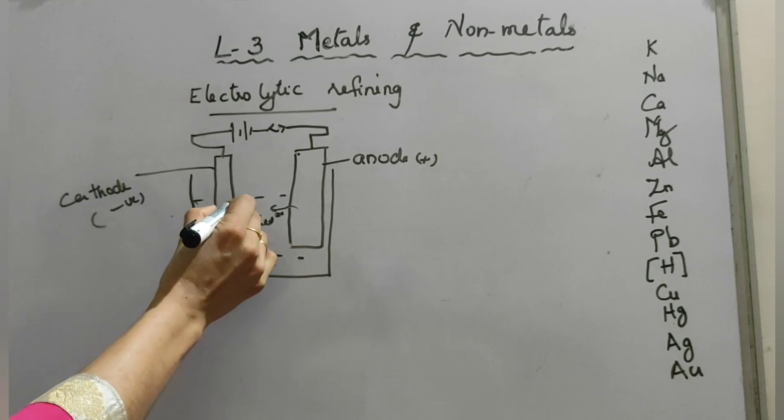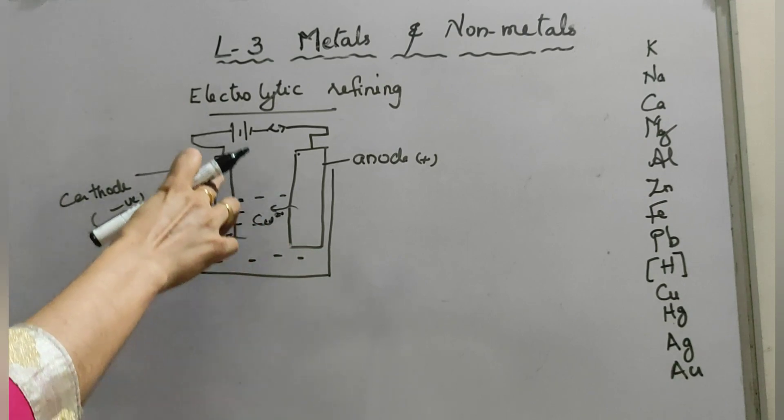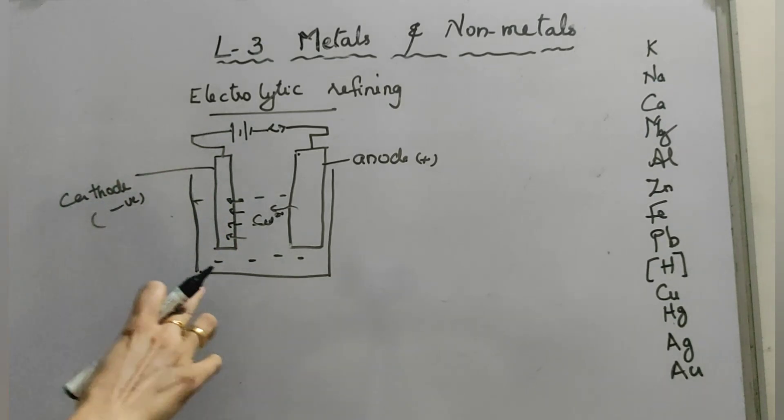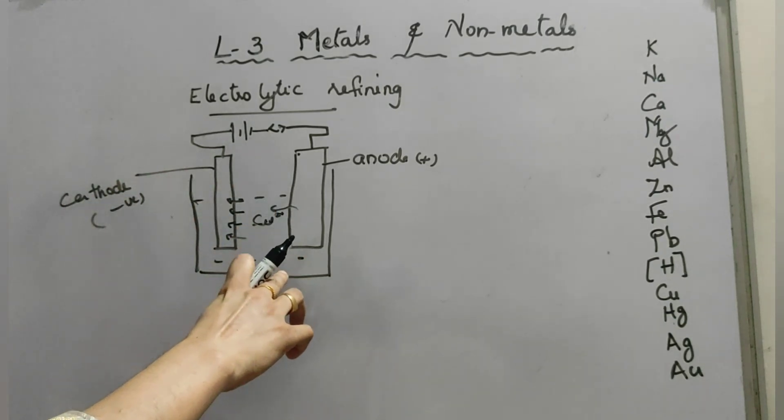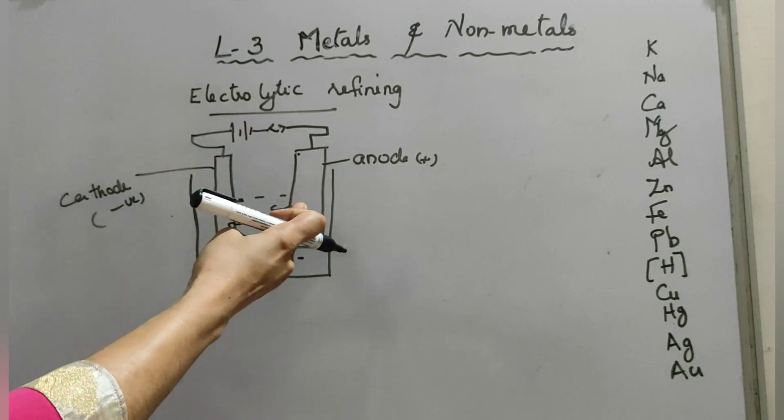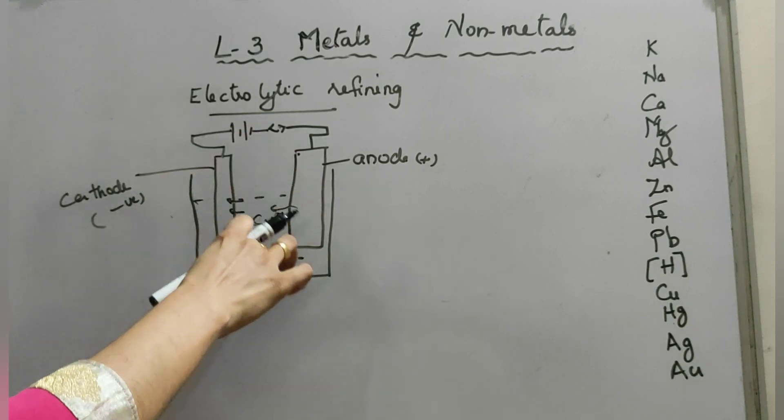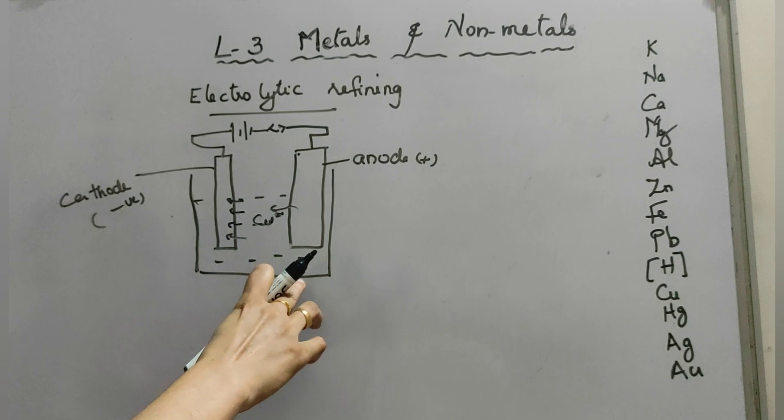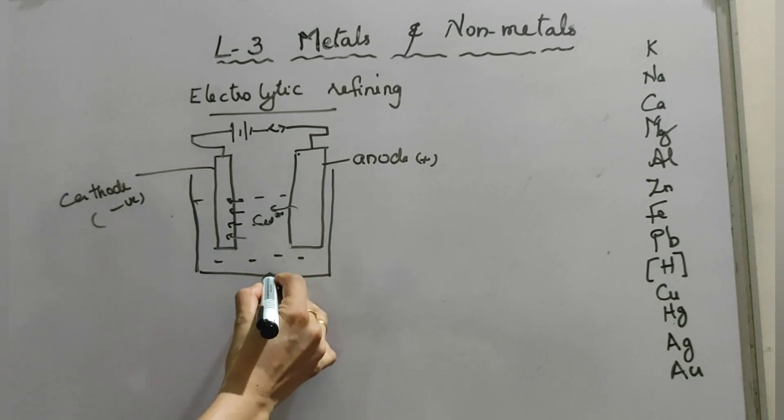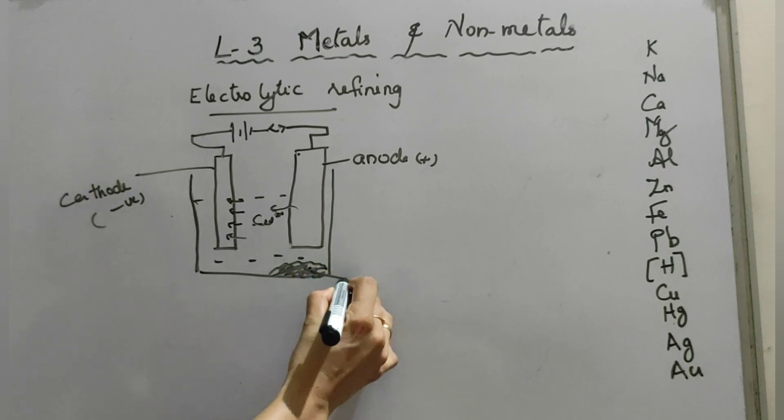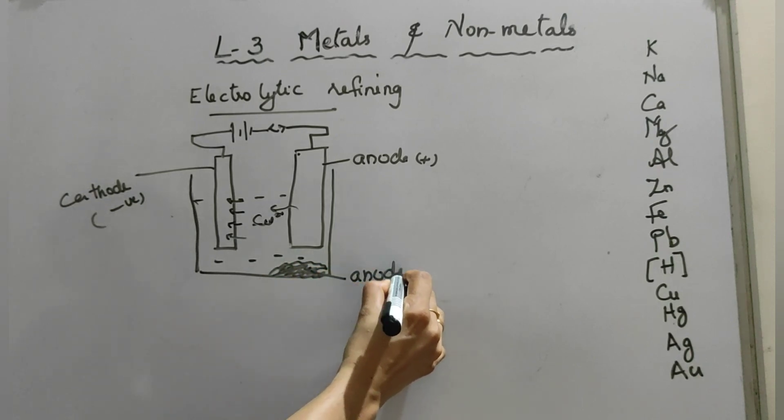Look, like this they are deposited. We already studied that cathode there is a thin strip. The soluble impurities, whatever impurities are there, go to the solution, whereas insoluble impurities settle down at the bottom of the anode. This is settled down at the bottom of the anode. This is known as anode mud.